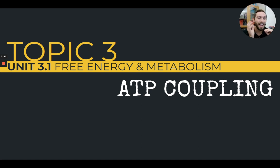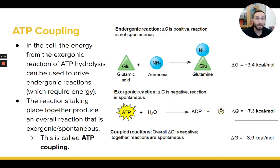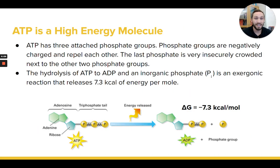The key is that the exergonic thing has to be more exergonic than the endergonic thing is endergonic. And that's where ATP comes in — this is going to be the exergonic thing that life bargains with the universe a lot of the time. ATP is a super important molecule, probably top three most important molecules in biology.